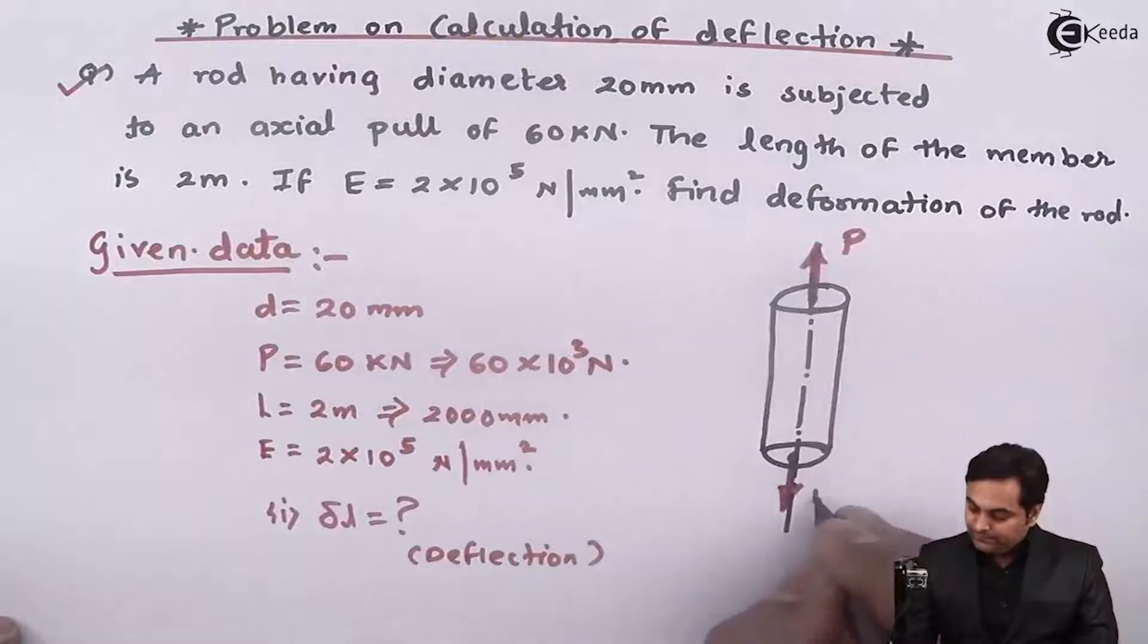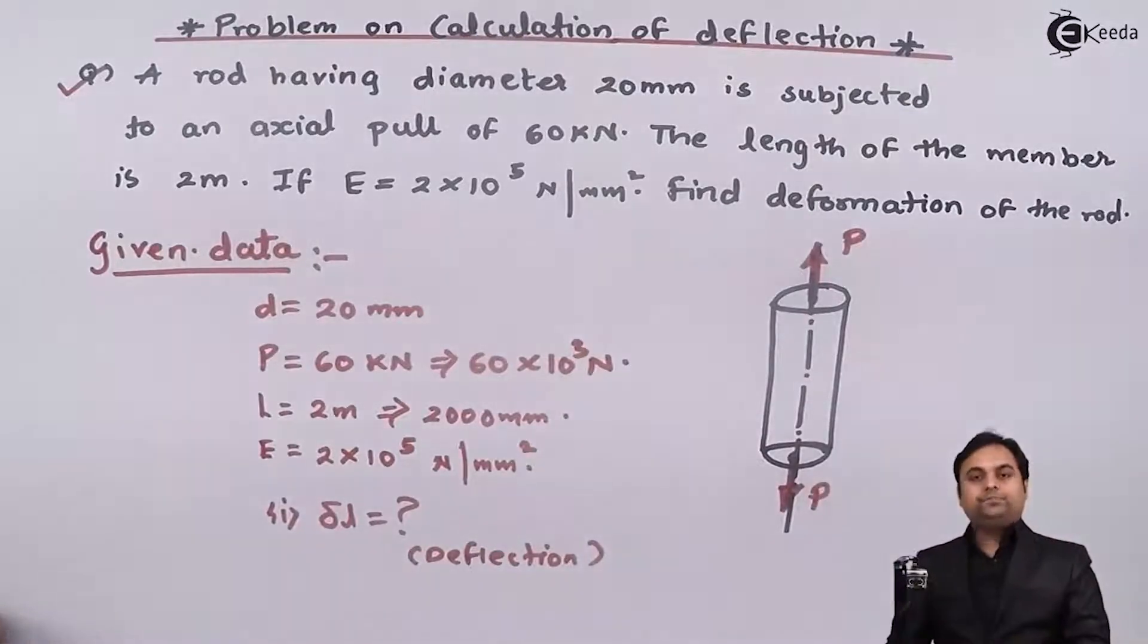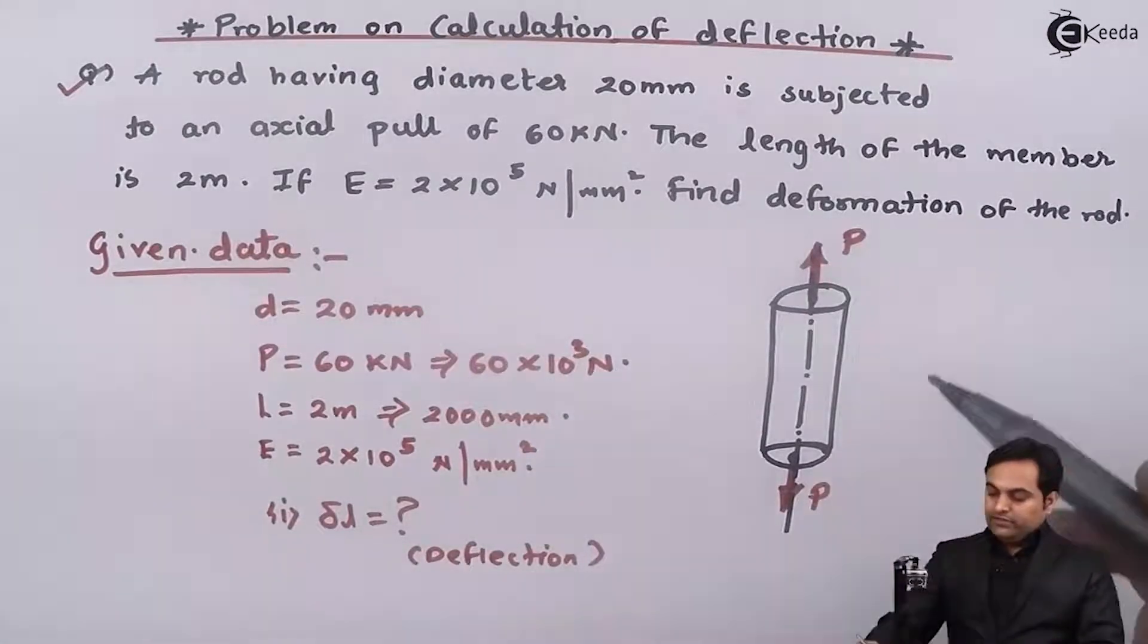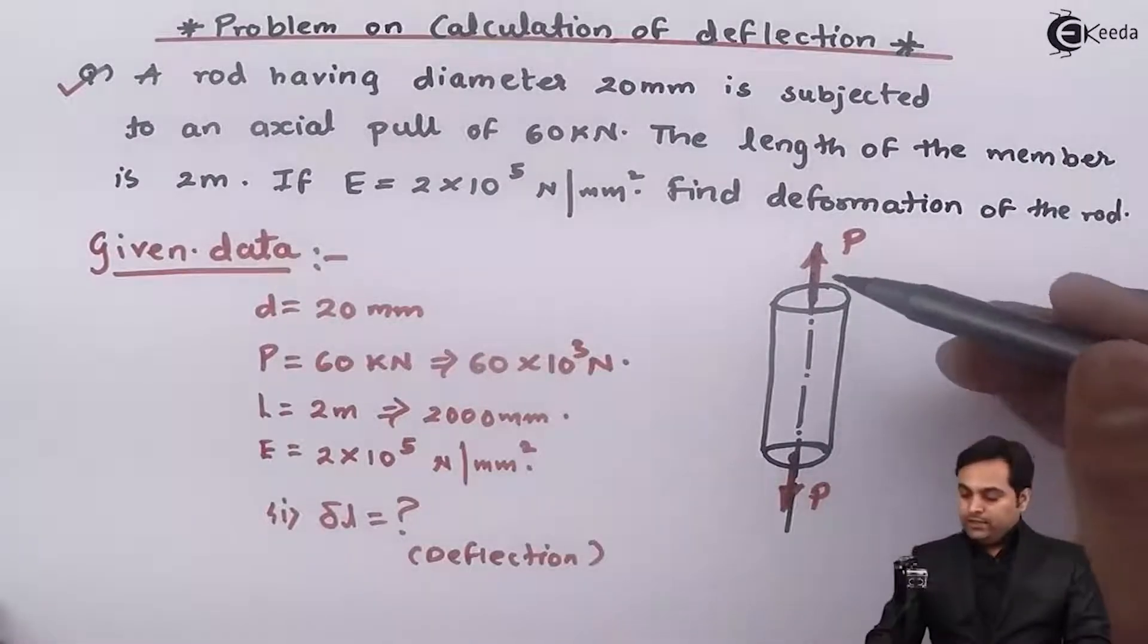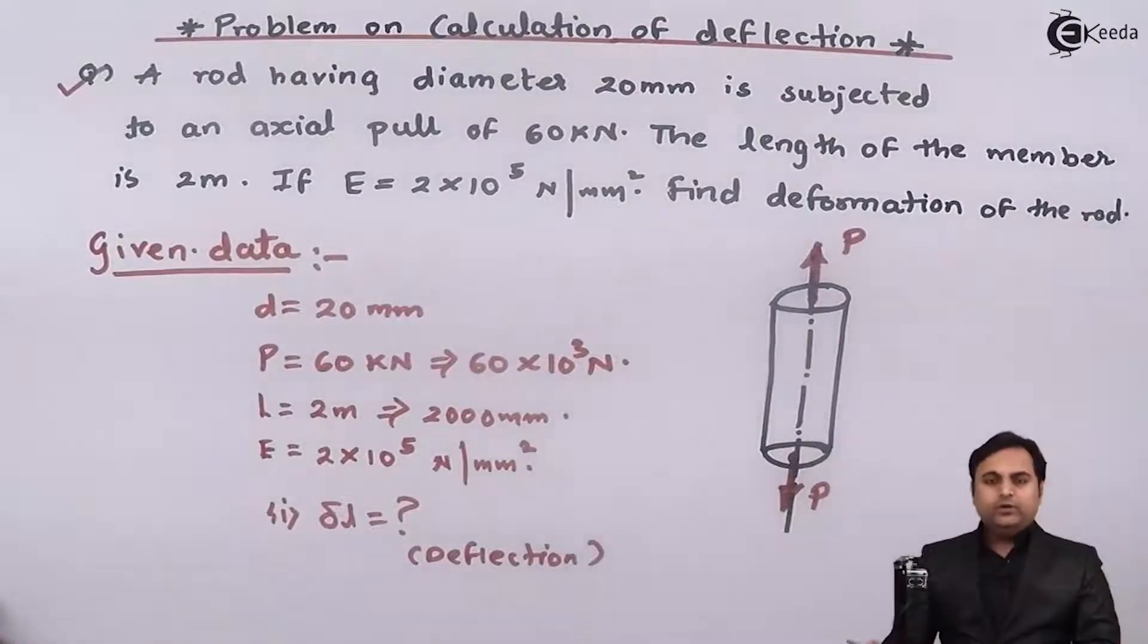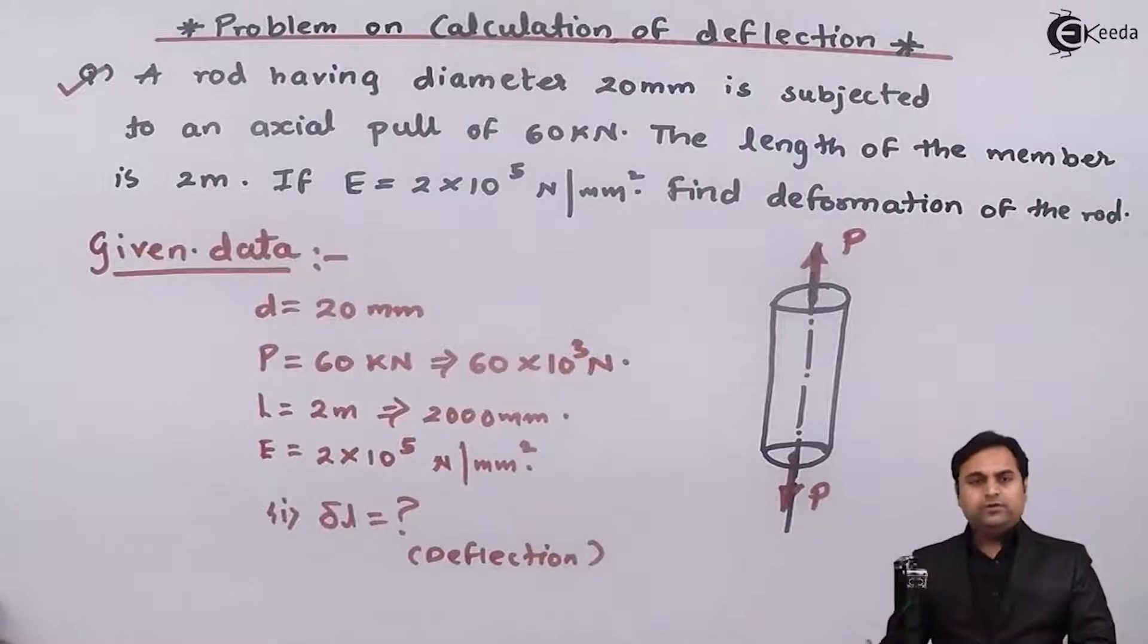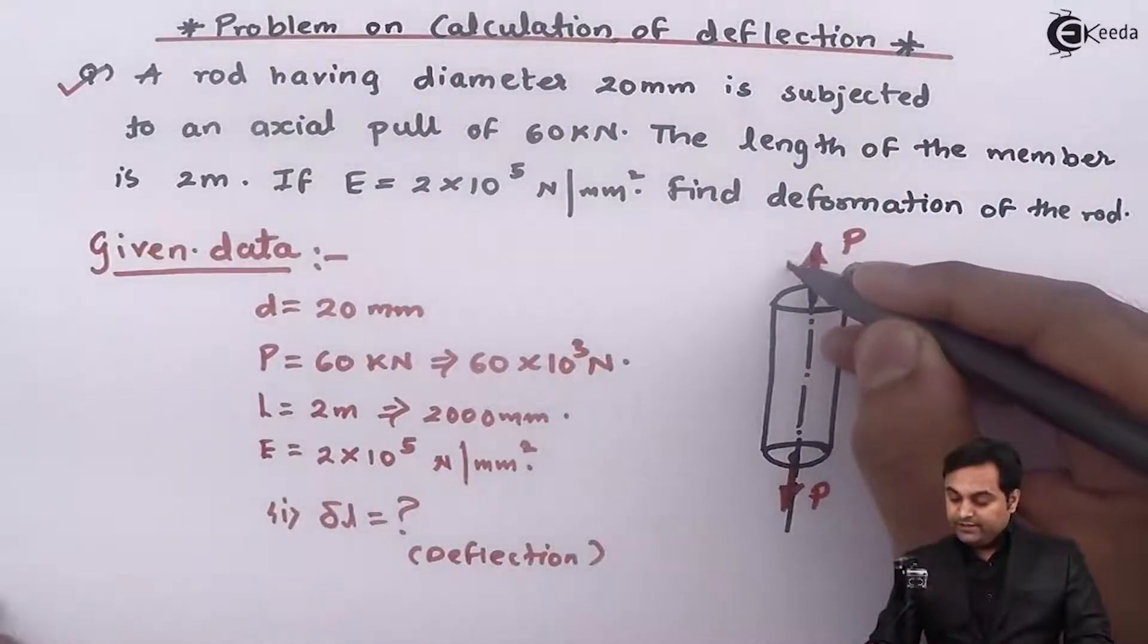By applying load. Next, when this rod is pulled, then the length of the rod will go on increasing and diameter will go on decreasing. So here if I draw the diagram.